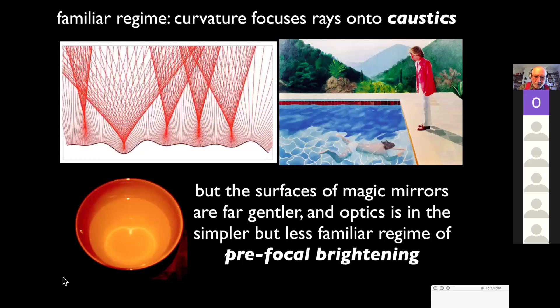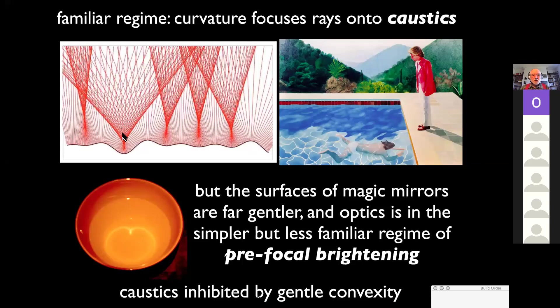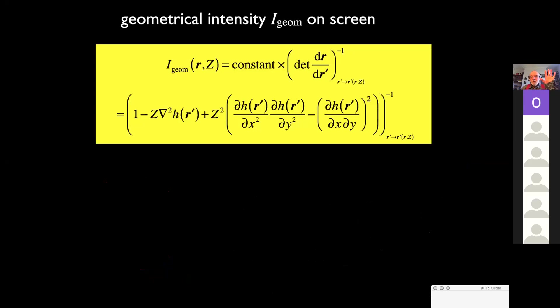Now, this doesn't happen with magic mirrors because the surfaces are far gentler. The foci are much farther away than your screen. And what you actually see is an easier to understand but almost never discussed regime of pre-focal brightening. The rays concentrate a bit before they focus. And this concentration has a lovely property. By the way, there never is any focusing because any focusing you will get is inhibited by the gentle convexity. It will be beyond infinity.